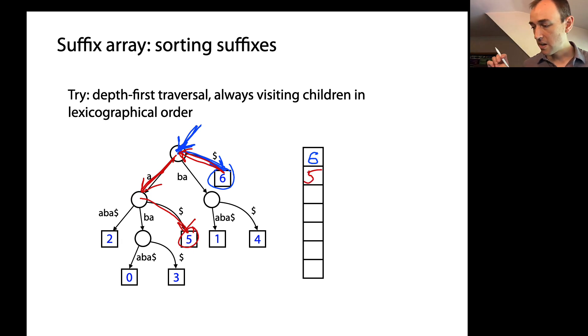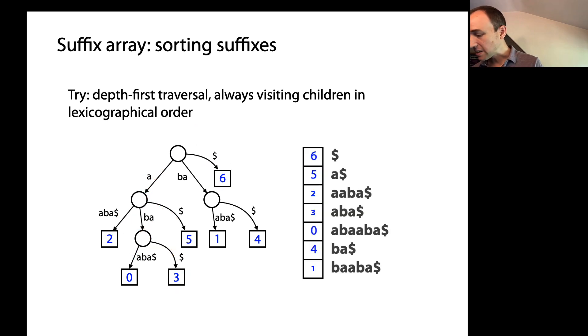Okay, so we keep going. Pop back up. Go down the edge that starts with A. We get our two. Keep going. Pop back up. Now we go down the edge labeled BA. Go down the edge labeled dollar sign. We get our three, and so on. Pop back up. Get our zero. It's getting a little messy. But anyway, you get the idea. We can fill in the entire suffix array over the course of this traversal, as long as we're careful to always visit the children of a node in alphabetical order, according to the edge label.